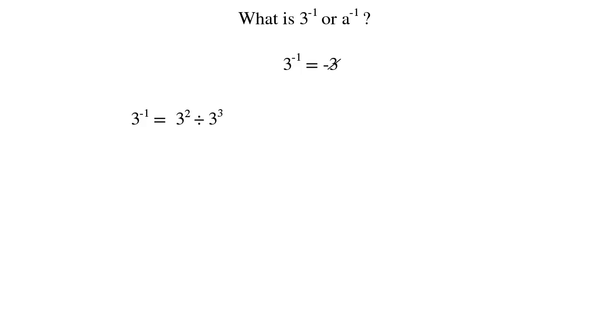Why is that? Well, using the rules of indices we know that when we divide numbers written in index form we subtract the indices or powers. So 2 minus 3 gives us negative 1. 3 squared divided by 3 cubed is 3 to the negative 1.